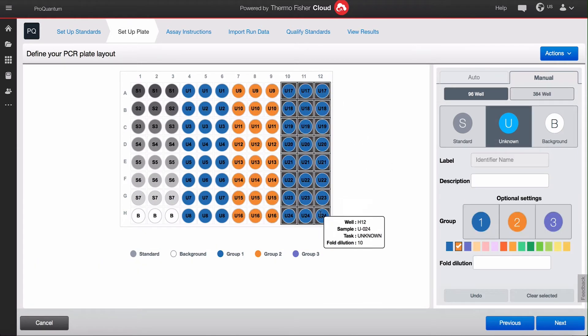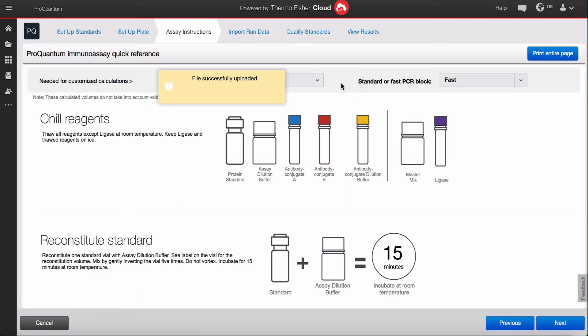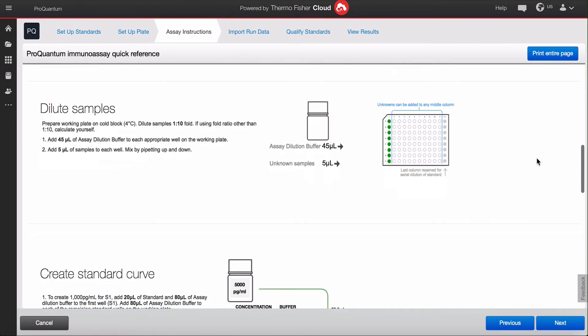Designate groups by color for any downstream statistical analysis. Once complete, save the plate layout. Get customized lab bench instructions based on your standard and plate designs. We'll use five microliter assay volume per well in this example.